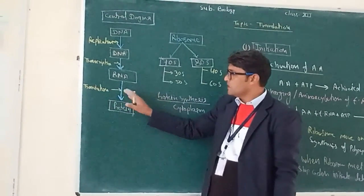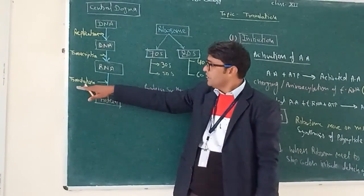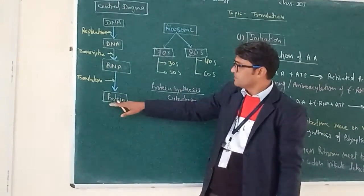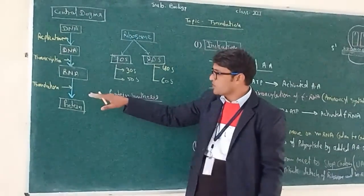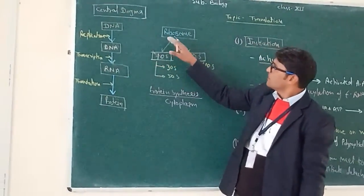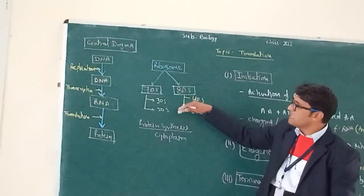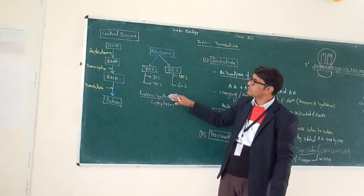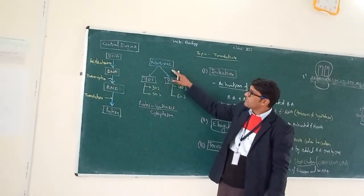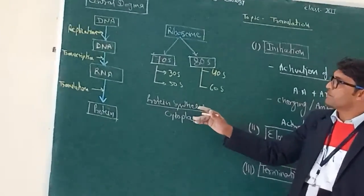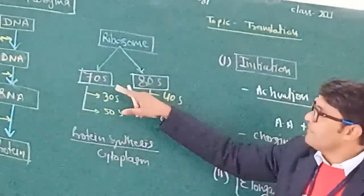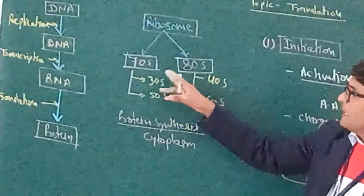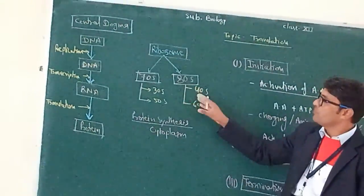We will discuss this step: translation. In translation, protein synthesis occurs in the cytoplasm, because protein synthesis is catalyzed by the cell organelle ribosome, and ribosomes lie in the cytoplasm. So protein synthesis for translation is expressed in the cytoplasm. Here we can see that ribosomes are of two types: 70S and 80S. The 70S type of ribosome is found in prokaryotes, while the 80S type is found in eukaryotes.